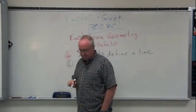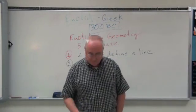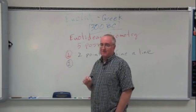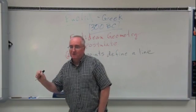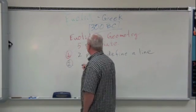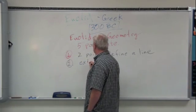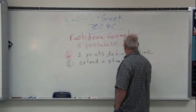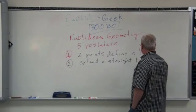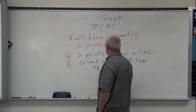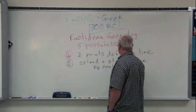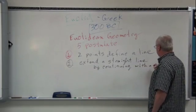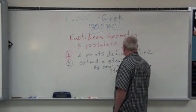The second postulate that Euclid was, once we have a line, we can extend that line by simply continuing to draw a straight line. We can extend a straight line by continuing with a straight line. Pretty simple stuff.